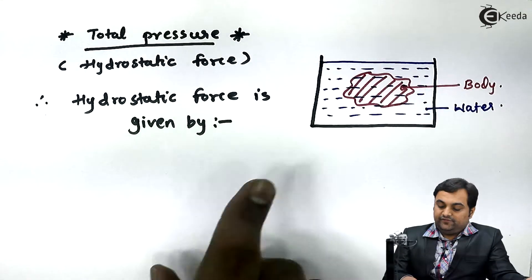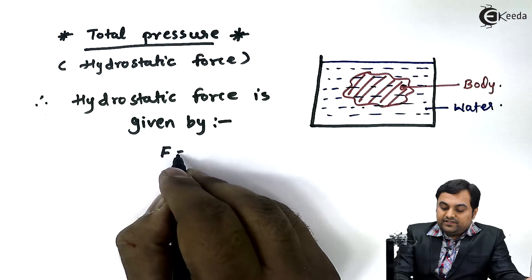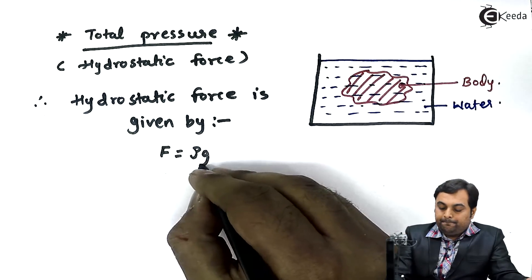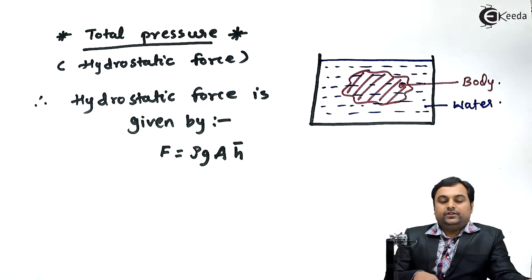Therefore, hydrostatic force is given by: F equals rho G A H bar. Here I have the formula for hydrostatic force.